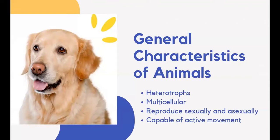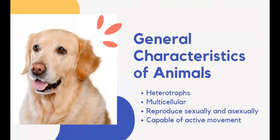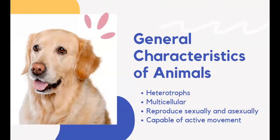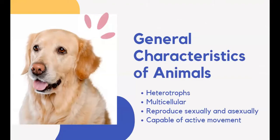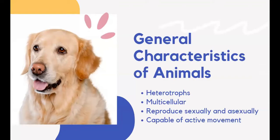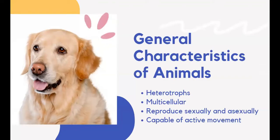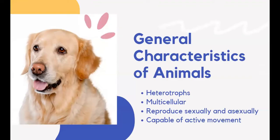Have you ever visited a zoo or an ocean park? You have probably seen animals like elephants, tigers, lions, jellyfishes, stingrays, turtles, and fishes. Animals thrive in so many places on Earth, from the deepest parts of the sea to the peak of the highest mountain. All animals share common characteristics.